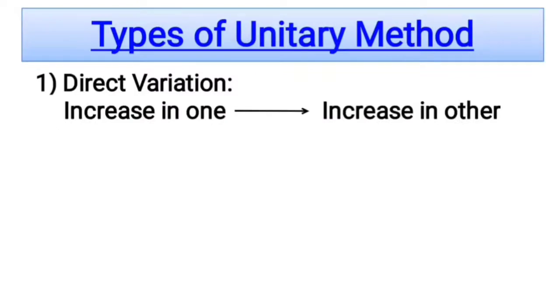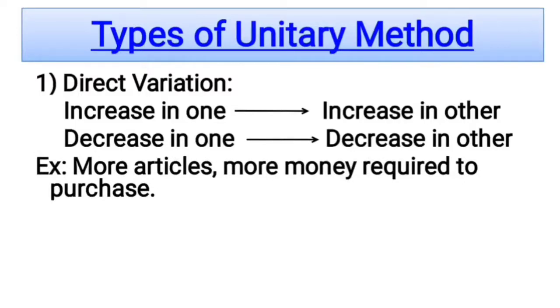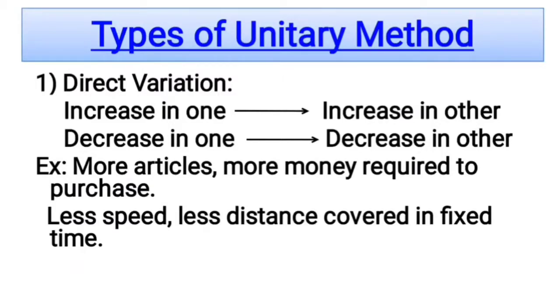Let's see direct variation method. If we increase any one value then the other value also increases. If we decrease any one value then the other value also decreases. For example, more articles means more money required to purchase. If you purchase 1 pen for Rs.5, then for 5 pens you have to spend Rs.25. Similarly, less speed means less distance covered — if speed decreases then distance covered in fixed time also decreases. Here, increase of one value increases the other and decrease of one value decreases the other, so this is called direct variation.